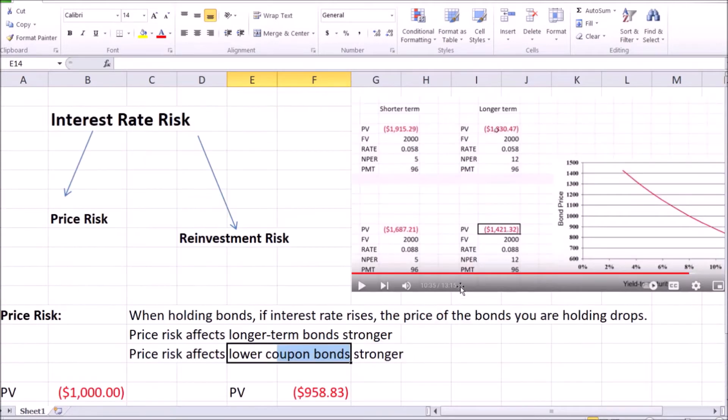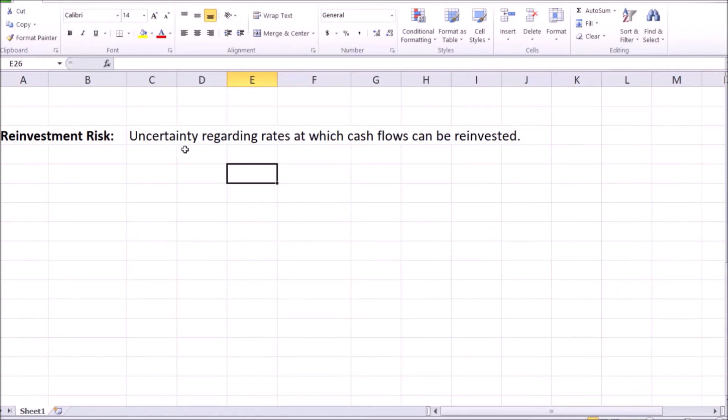Next let's move on to that other part of the interest rate risk, which is reinvestment risk. Reinvestment risk is the uncertainty about the interest rates at which your cash flows can be reinvested. What do we mean here? Well, let's have a look at a timeline.